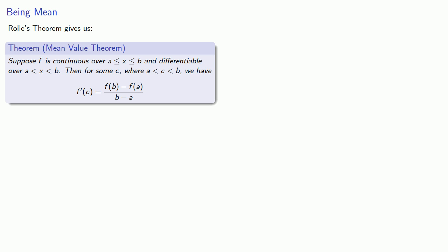Well, let's see if we can make sense out of this. So, we have a function that is continuous and differentiable. Let's take a look at the graph. So, our interval runs from x equals a to x equals b.